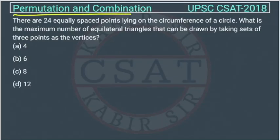This is a question of permutation and combination chapter asked by UPSC in CSAT paper of 2018. There are 24 equally spaced points lying on the circumference of a circle.